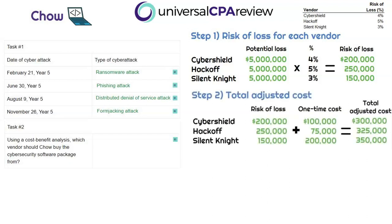In step two, we take the risk of loss from step one and add in the one-time implementation cost from each vendor's quote. For CyberShield, the one-time cost was $100,000; Hackoff was $75,000; and Silent Night was $200,000. Silent Night had the lowest risk of loss, but also costs the most at $200,000. Adding both numbers together gives the total adjusted cost: CyberShield is $300,000, Hackoff is $325,000, and Silent Night is the highest at $350,000. So now CyberShield looks like the best deal at $300,000 total adjusted cost.